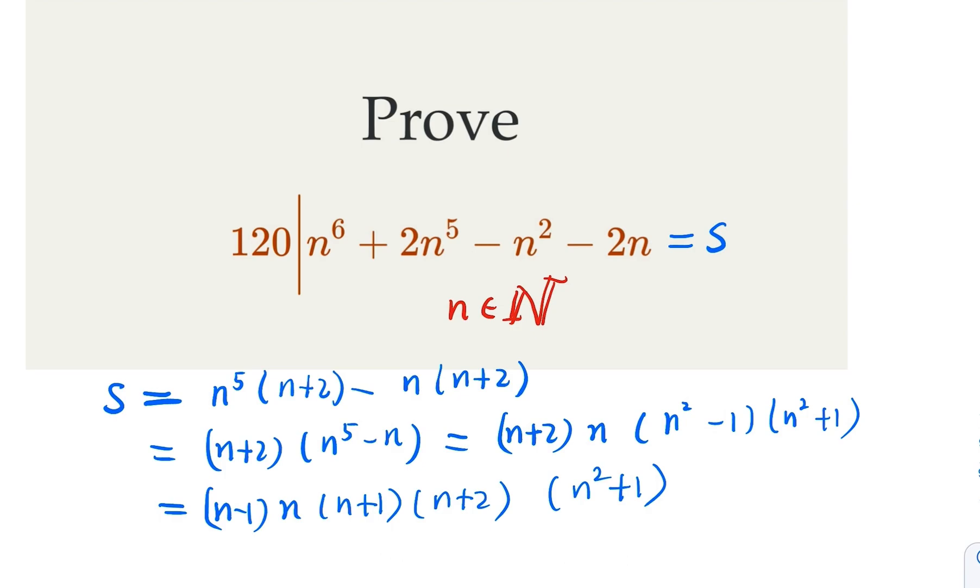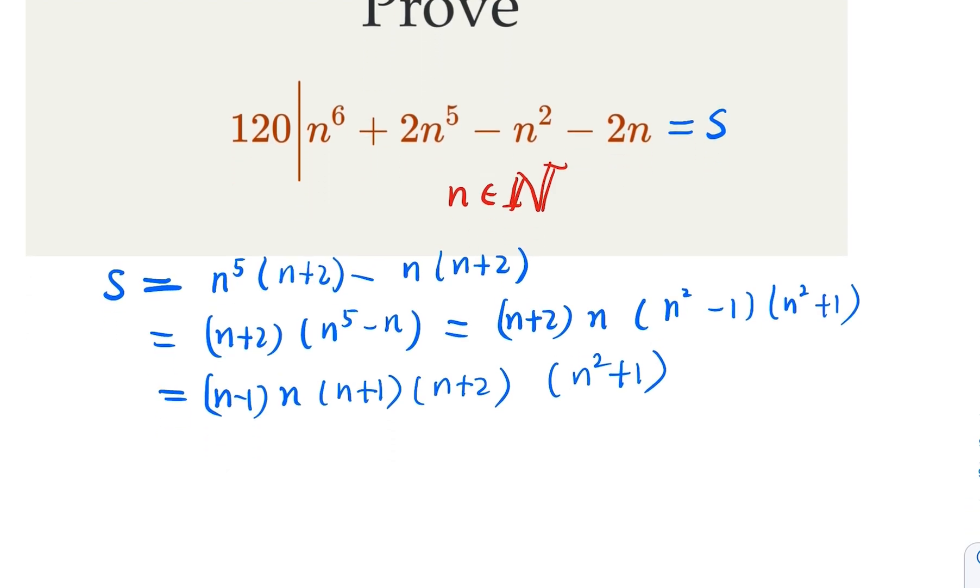Notice that you do have some consecutive integers. This n squared is split into n minus 1 and n plus 1, and that's n, and that's n plus 2. So you have four consecutive integers. But we need 5 because 120 is 5 factorial.